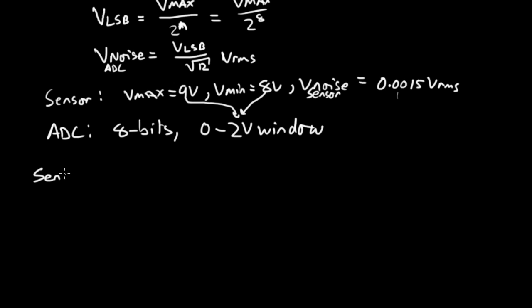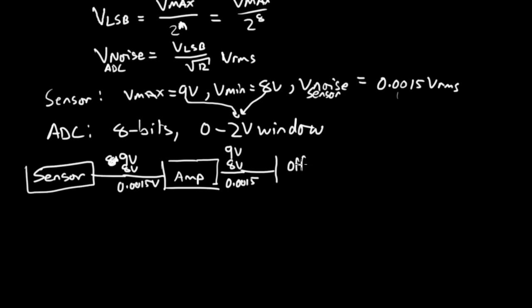We have the sensor, which outputs 9 volts, 8 volts, and 0.0015 volts. And then we amplify it, buffer it, so it comes out of there the same way: 9 volts, 8 volts, 0.0015 volts. And now we're going to offset it by minus 8 volts. So we've created a circuit that subtracts 8 volts from that value. What do we get out of there? Well, now our max signal is 1 volt, our minimum signal is 0 volts, and our noise is still the same because that doesn't depend on the offset. And then we go to the ADC, which has a 0 to 2 volts window.